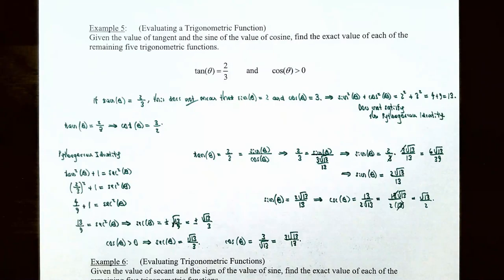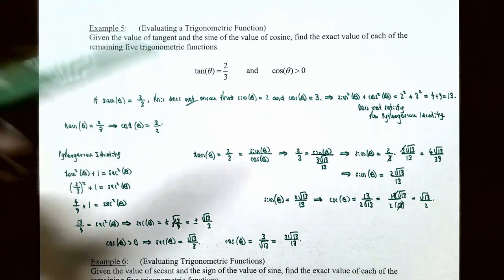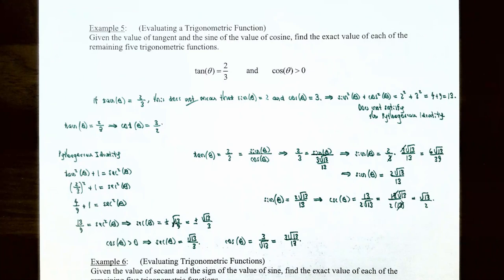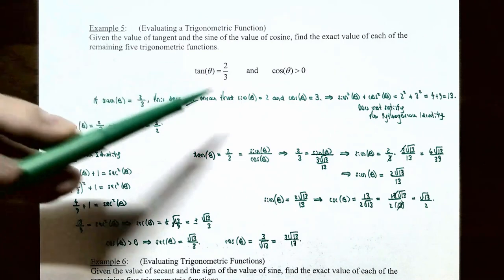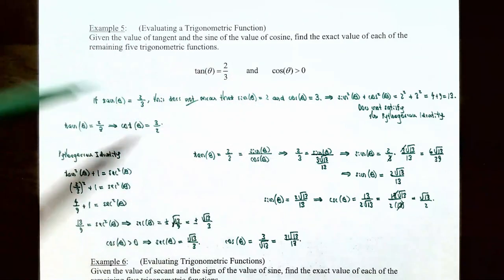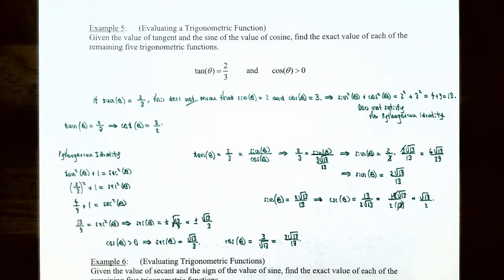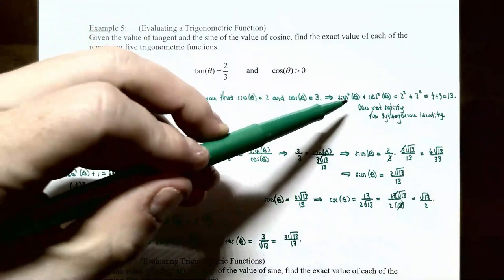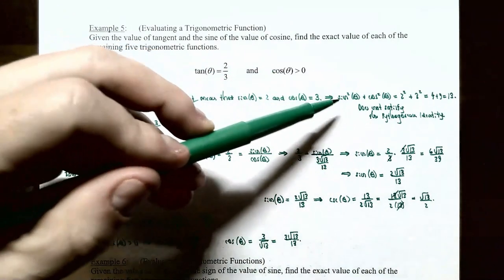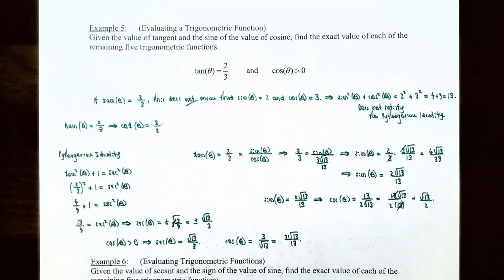In example five, we're going to evaluate a trigonometric function. Given the value of the tangent function and the sign of the cosine function, find the exact value of each of the remaining five trigonometric functions. Tangent of theta equals two-thirds and cosine of theta is positive. Note that tangent of theta equaling two-thirds does not mean sine of theta equals 2 and cosine of theta equals 3, because sine squared of theta plus cosine squared of theta must still equal 1, and 2 squared plus 3 squared equals 13, which does not satisfy that identity. So we need to approach this differently.